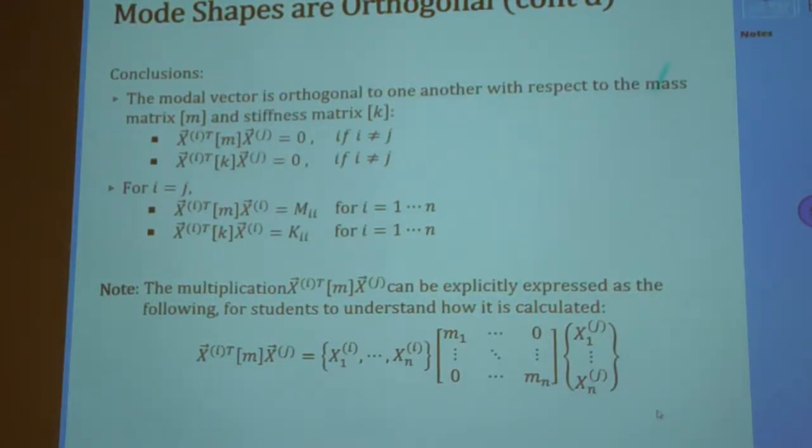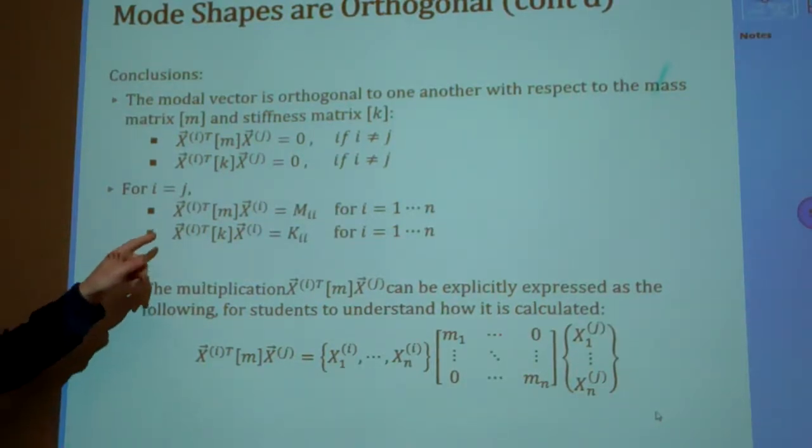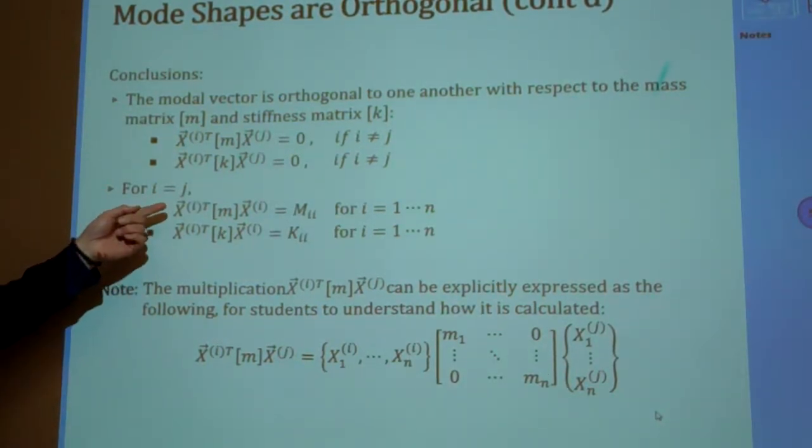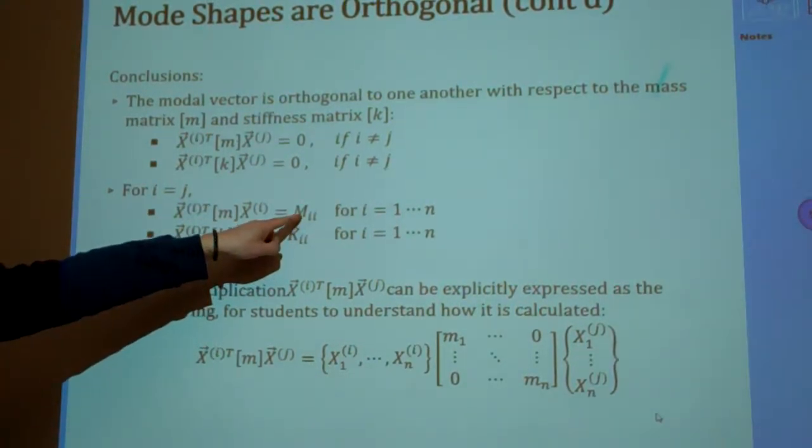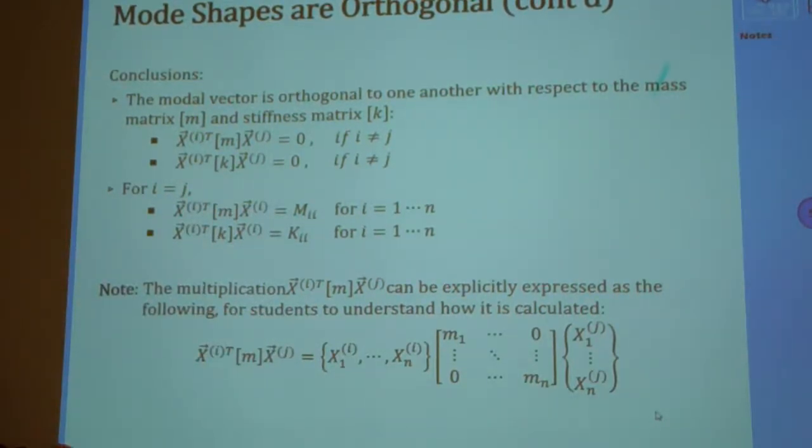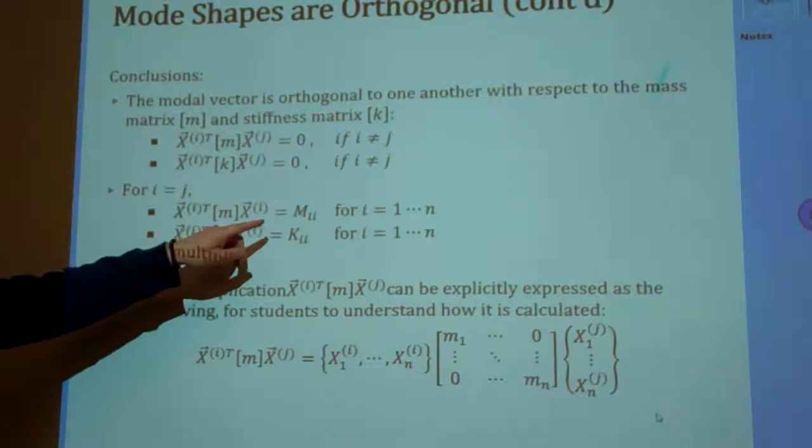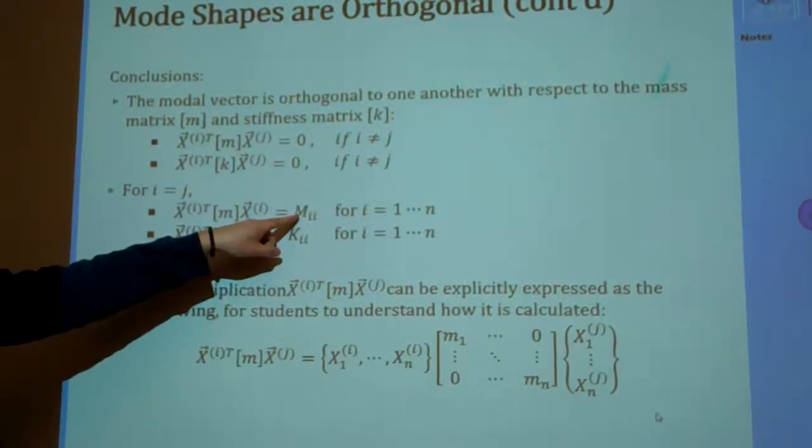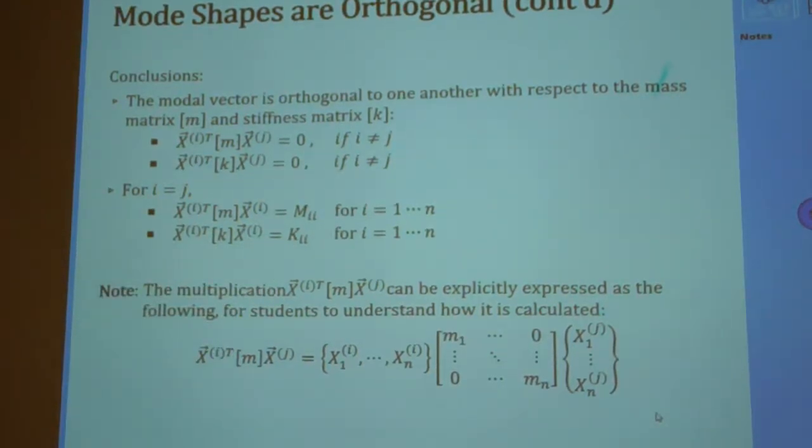And we learned to normalize the modal vectors. So normalization is, in a common exercise, to scale the modal vectors such that this number becomes one. And from exercise of the homework, if we normalize with respect to one, then this should be corresponding natural frequencies squared.